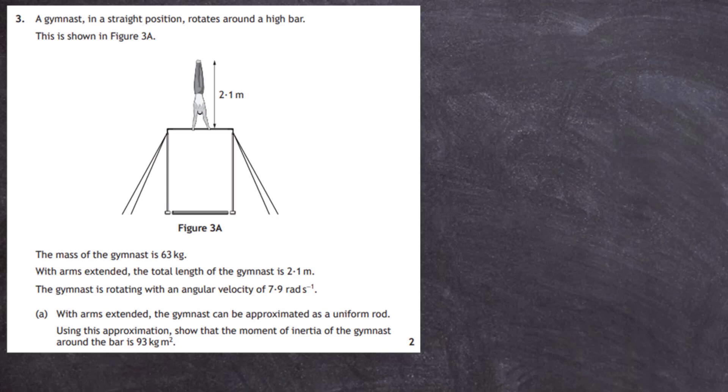The gymnast is rotating with an angular velocity of 7.9 radians per second. Now for two marks, with arms extended the gymnast can be approximated as a uniform rod. Using this approximation show that the moment of inertia of the gymnast around the bar is 93 kilogram meters squared.